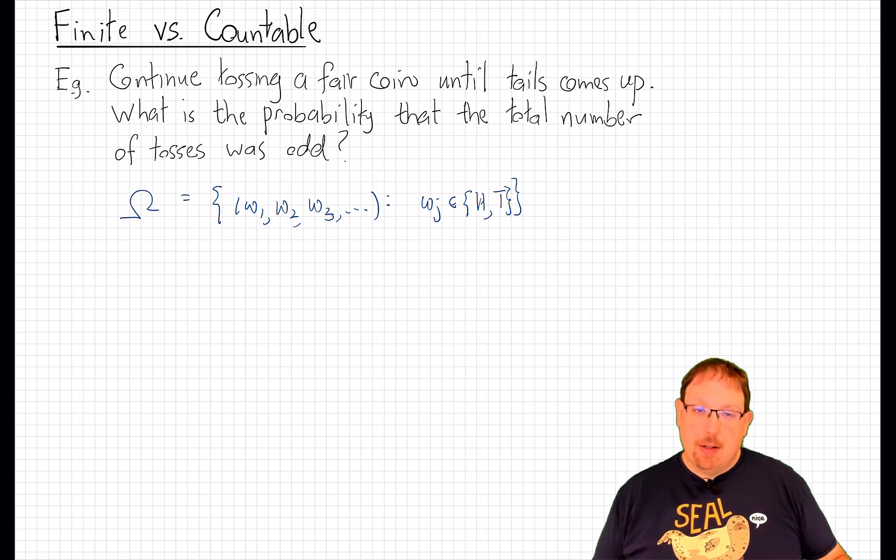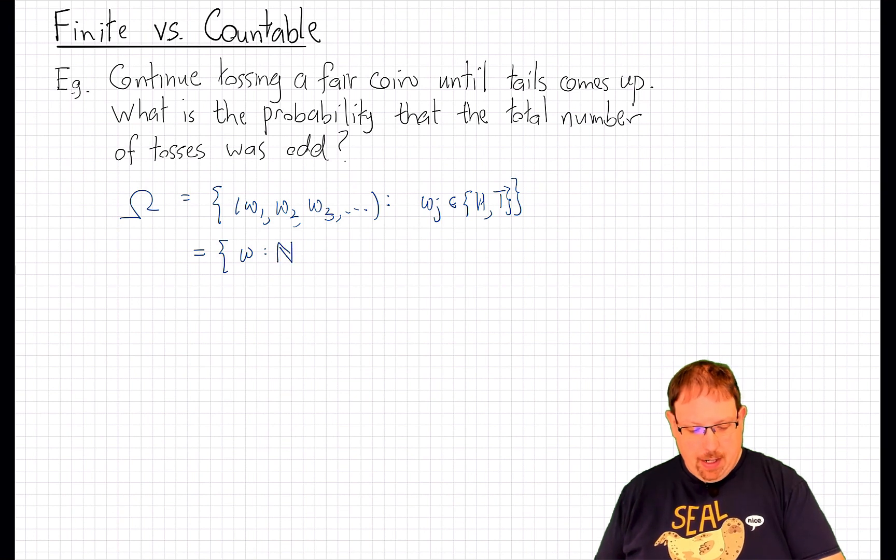Now a little bit of useful notation here. Instead of writing these as sequences, we can recall that a sequence is just a function and write this as the set of all functions, little omega, from the natural numbers, the indexing set,